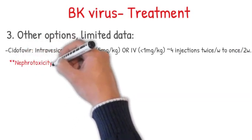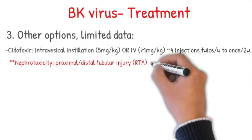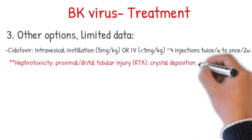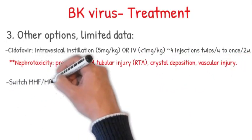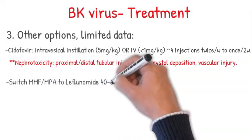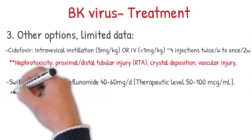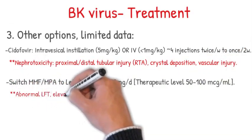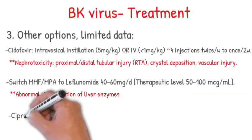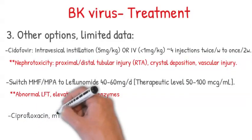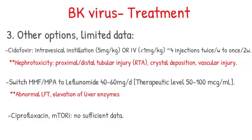A problem with Cidofovir: it causes nephrotoxicity, proximal and distal RTA, crystal deposition, and vascular injury. You might switch MMF to leflunomide 40 to 60 mg per day, with a therapeutic level of 50 to 100. The problem with leflunomide is it causes abnormal liver function and elevation of liver enzymes. Other options include ciprofloxacin and mTOR inhibitors, but again there is limited data to support these.